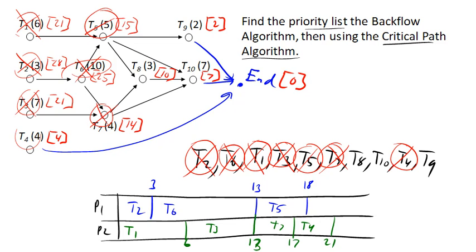And now at time 18, task 5 gets completed. And both of these are done, so task 8 and task 9 are now ready. So we can go ahead and assign task 8 here. Task 8 has a time of 3, takes me out to 21.